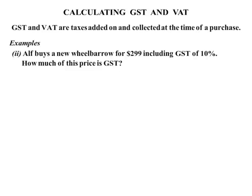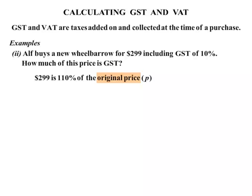Example 2: Alf buys a new wheelbarrow for $299 including GST of 10%. So this price already has the GST included in it. We are asked how much of this price is GST. The $299 is 110% of the original price. The original price we don't know, so let's call it P.